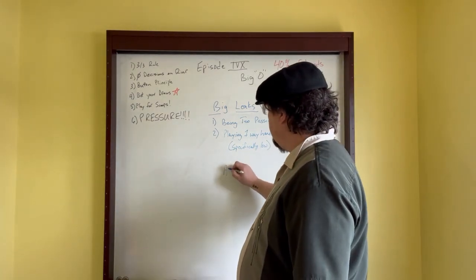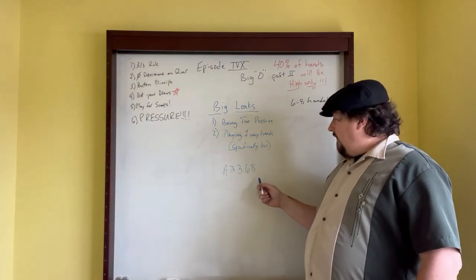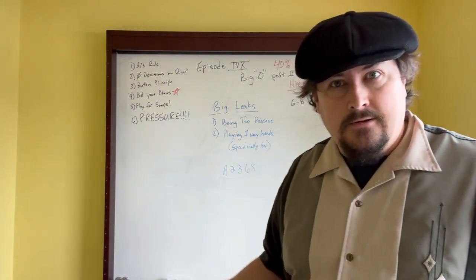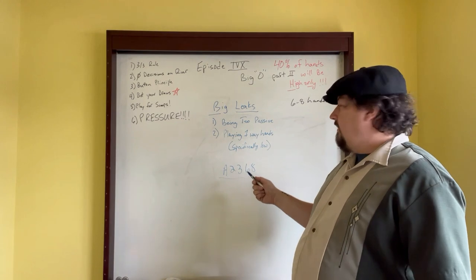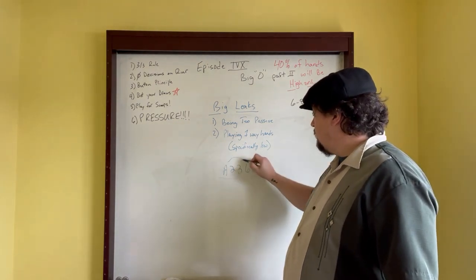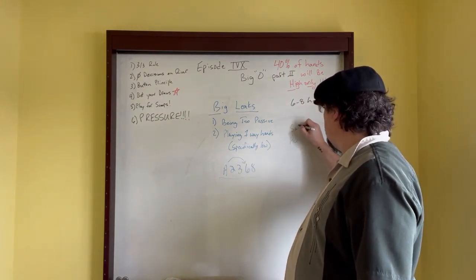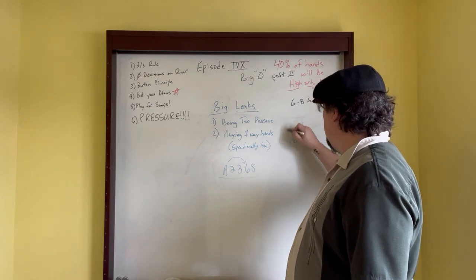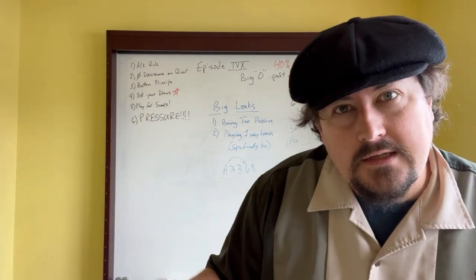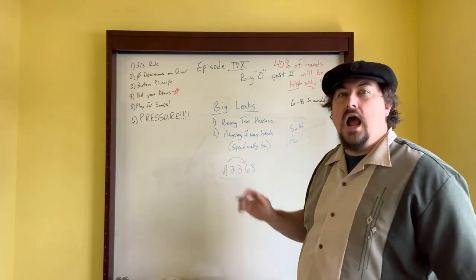So if you look down at a hand like ace, deuce, three, six, eight, I'm going to be playing this hand. I'm not saying fold this hand, that would be insane. But I am going to really like this hand if my ace is suited, like for example with the six or eight. A suited ace, I'm still playing, because that principle still applies because 40% of the time there's going to be just a high.